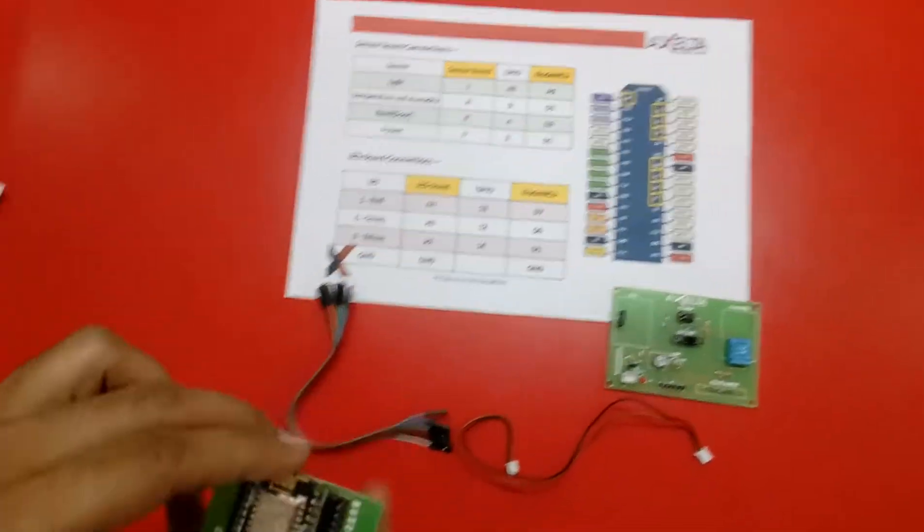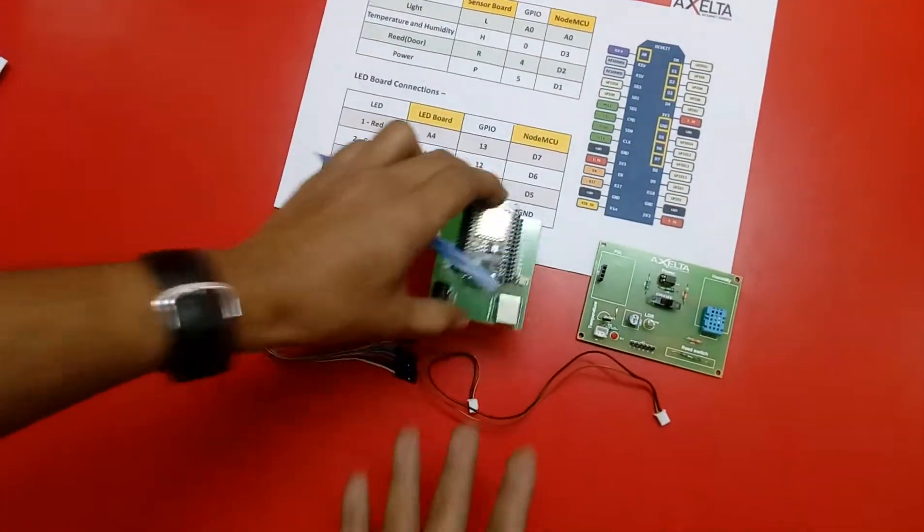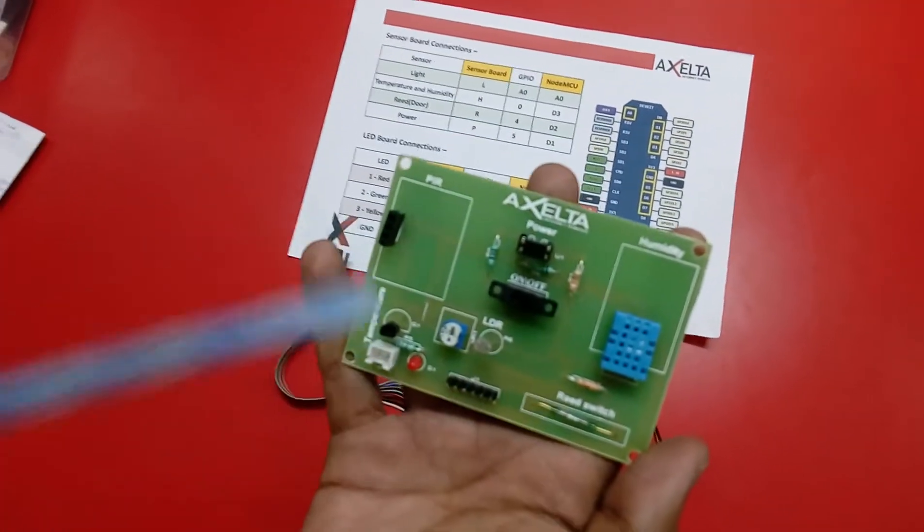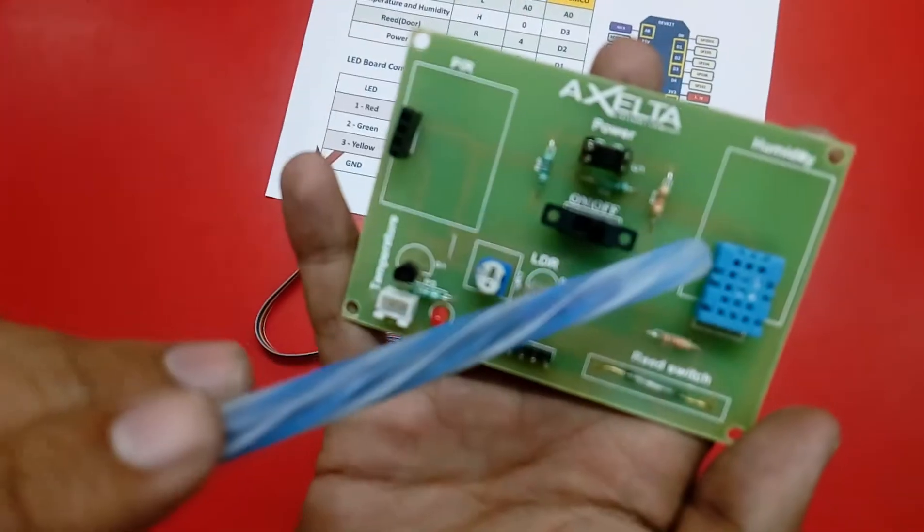In this video I will show you how to connect this NodeMCU board with the sensor board. This sensor board consists of total 5 sensors - it has 1 analog and 4 digital sensors.